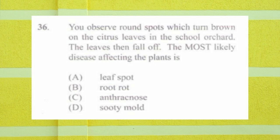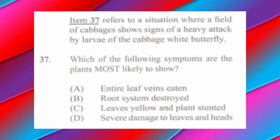Question number thirty-six: you observe round spots which turn brown on citrus leaves in the school orchard; the leaves then fall off. The most likely disease affecting the plant is a) leaf spot, b) root rot, c) anthracnose, d) sutimol. The answer is a) leaf spot.